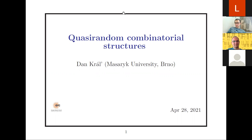For example, three or four years ago, you disproved with your co-authors the Steinberg conjecture, which was quite known in our community. That was the conjecture that every planar graph that has no cycles of length four and five is three-colorable. That was the conjecture and it's not true — there's a nice construction. Today we will hear something about quasi-random structures in combinatorics. I don't know much about it, I'm looking forward to the talk. Welcome, Dan. Please start.